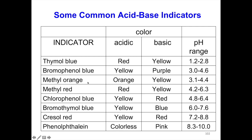Next is methyl orange. In acidic it shows orange, but in basic it shows yellow color. The orange color starts to change to yellow in the pH range of 3.1 to 4.4.